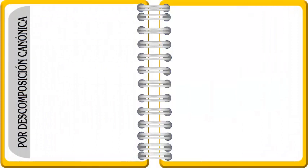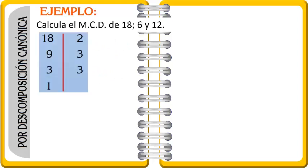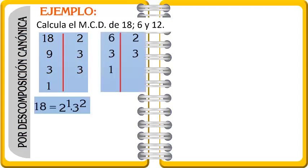El segundo método es por descomposición canónica. Ejemplo: calcular el máximo común divisor de 18, 6 y 12. ¿En qué consiste la descomposición canónica? A cada uno de los números 18, 6 y 12 lo vamos a sacar su mitad, su tercia, de manera separada. Sacamos: 18 entre 2 = 9, 9 entre 3 = 3, 3 entre 3 = 1. Entonces 18 = 2¹ × 3².